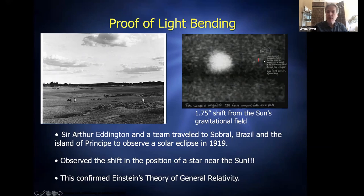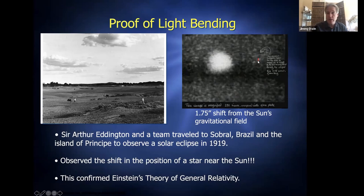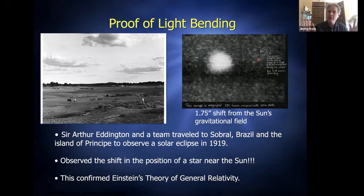The 1919 observations showed where the stars were actually positioned versus where they should have been without the sun bending the light. The shift they found matched Einstein's corrected calculation: about one and three-quarters arc seconds. This was a great breakthrough — everyone hailed Einstein as a genius. Had the 1914 observation succeeded with his incorrect prediction, they might have discarded general relativity entirely. From that point on, further experiments confirmed that light does get bent when it passes close to a gravitational field.